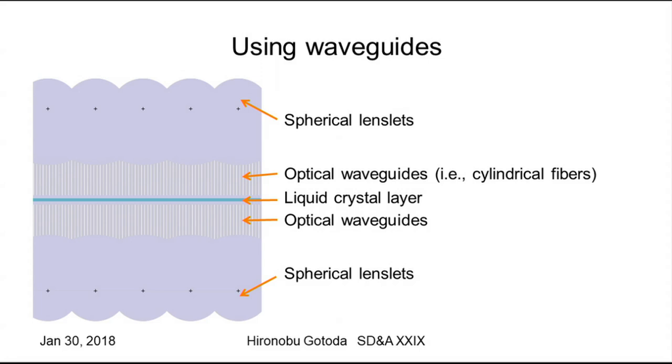Here you see that lenslets, arrays of micro-lenses can be seen on the bottom. Here is also an array of micro-lenses. In the middle, we have a liquid crystal layer. Between the micro-lenses arrays and liquid crystal layer, there are a bunch of waveguides, which are actually cylindrical fibers.